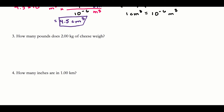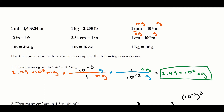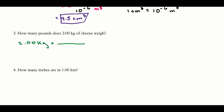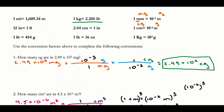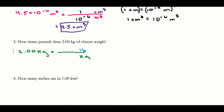How many pounds does 2 kilograms of cheese weigh? My given is 2.00 kilograms. I want to get out of kilograms and into pounds. I have that relationship: one kilogram is 2.205 pounds. So I put kilograms on the bottom and pounds on the top. Taking 2.00 times 2.205, the unrounded value I get is 4.41 pounds.